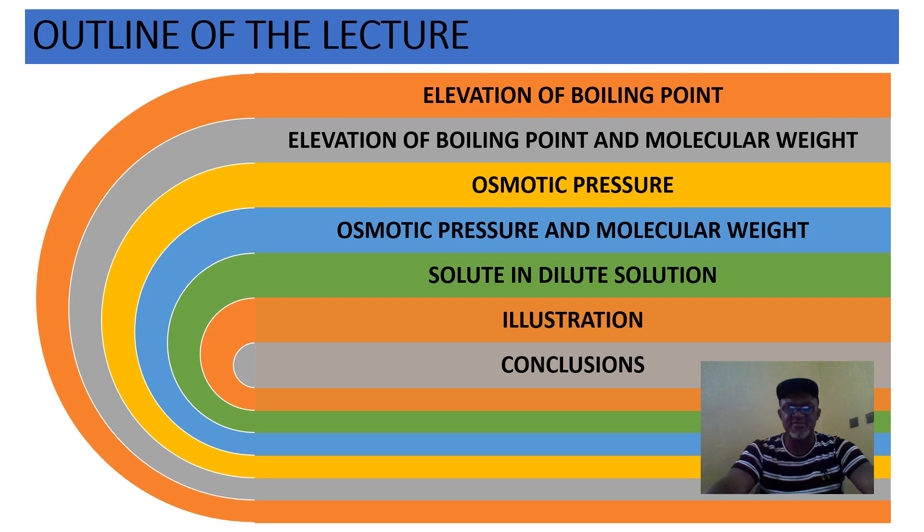We're going to look at the remaining two colligative properties. We've looked at vapor pressure lowering, we've looked at depression of freezing points. So we're going to look at elevation of boiling points, then elevation of boiling point and molecular weights. We'll look at osmotic pressure and its application in molecular weight determination. We'll look at solutes in dilute solutions and we'll look at some illustration and conclude.